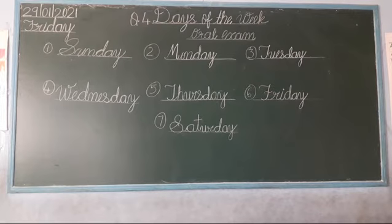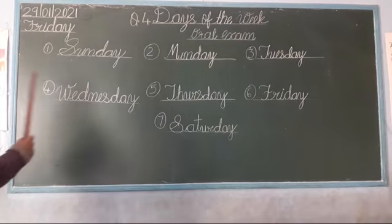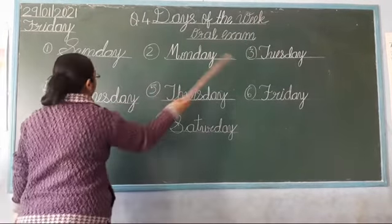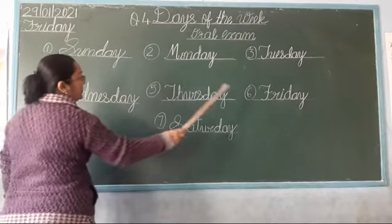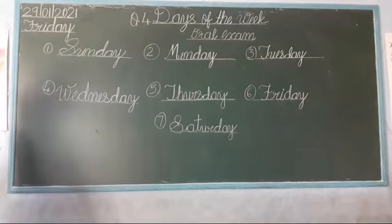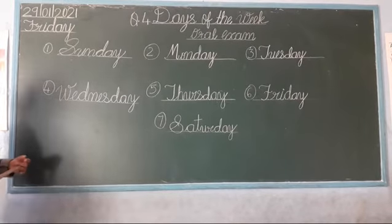Children, look at the blackboard. How many days are there in a week? 7 days. 1, 2, 3, 4, 5, 6 and 7. Okay? Days in a week: 7.